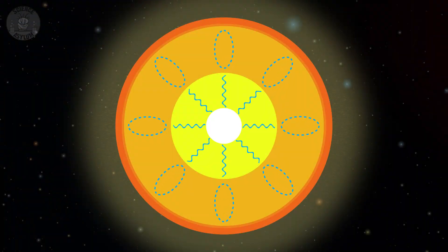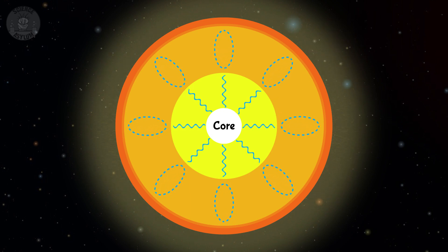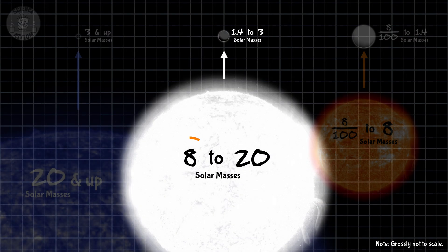How come an 8 solar mass star doesn't make an 8 solar mass neutron star? Because the whole star doesn't become a neutron star, just its core. A star's core is where the fusion is happening, but that core is surrounded by several other layers that are just hot — those outer layers are where you'll find the majority of a star's mass. But those layers get blasted away during the star's death throes. Only the core is left behind to collapse into a stellar corpse. So an 8 solar mass star only makes a 1.4 solar mass corpse, and a 20 solar mass star only makes a 3 solar mass corpse.